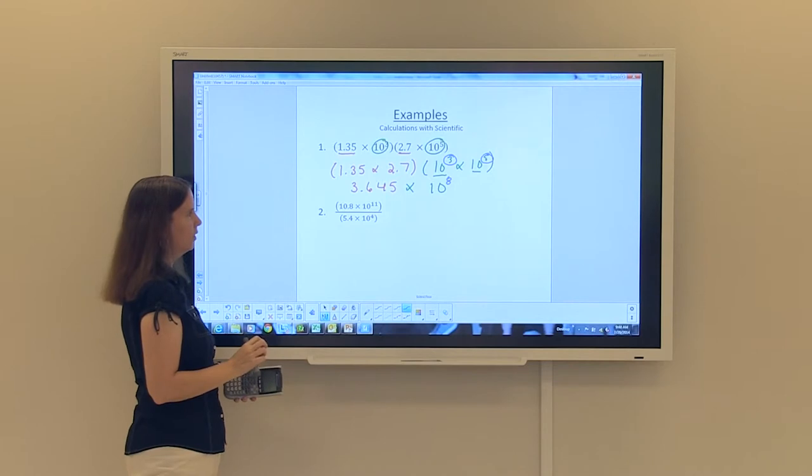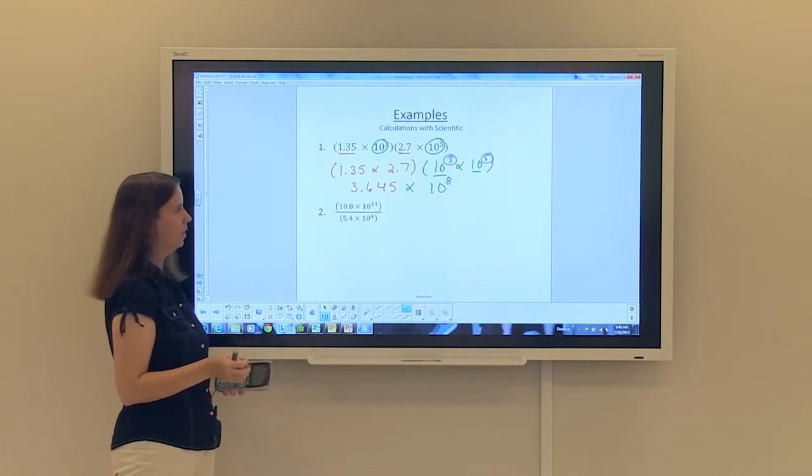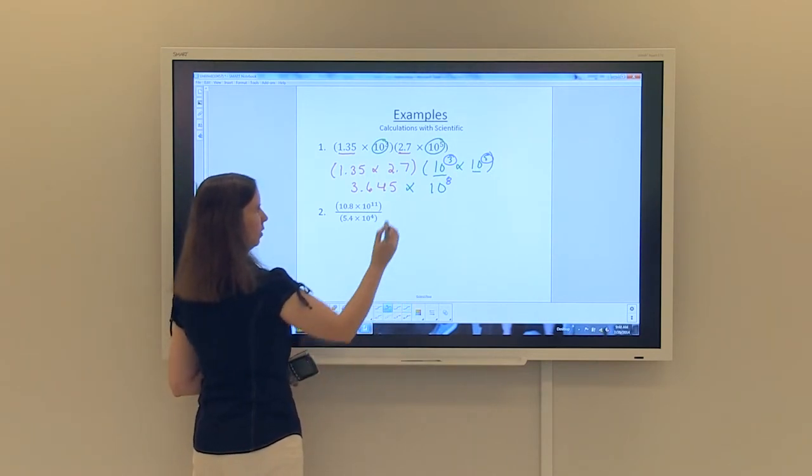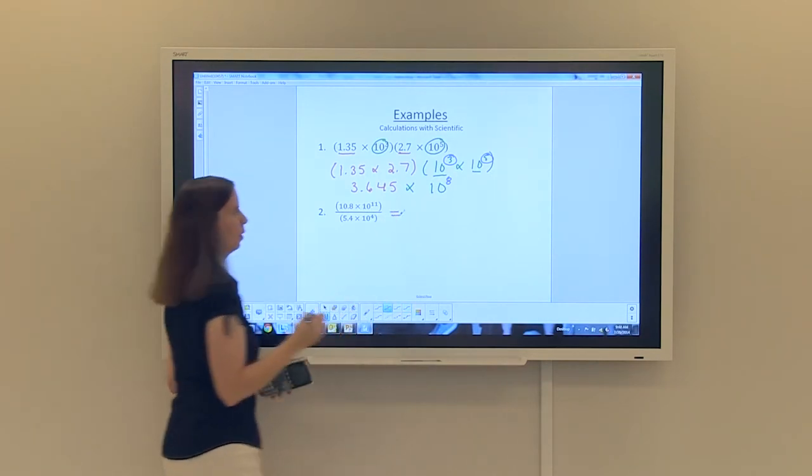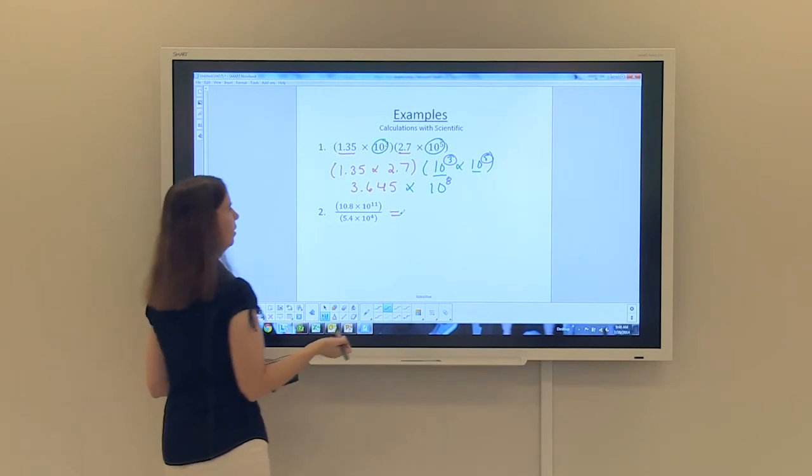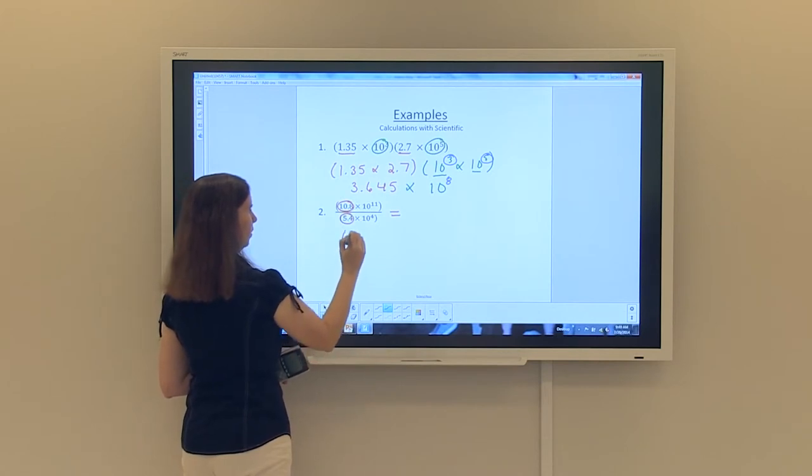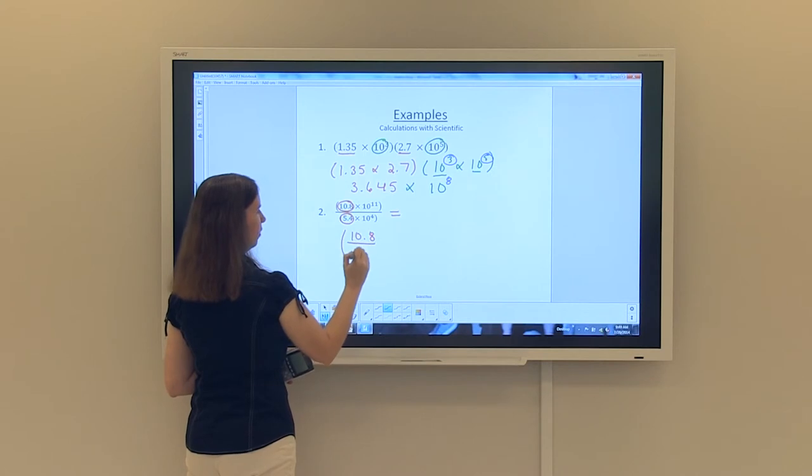The second example is division. So 10.8 times 10 to the 11th divided by 5.4 times 10 to the fourth. So again, I'm going to handle this the same way I did the last problem. I'm going to group like things together. So I'm going to group the 10.8 with the 5.4, so 10.8 divided by 5.4.